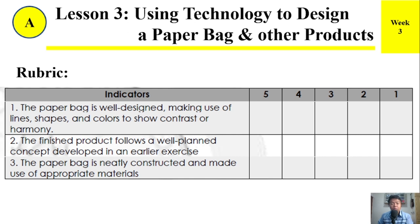This is our rubric for paper bag making. Here are the indicators. Number 1: The paper bag is well designed, making use of lines, shapes, and colors to show contrast or harmony. Number 2: The finished product follows a well-planned concept developed in an earlier exercise. Number 3: The paper bag is neatly constructed and made use of appropriate materials.